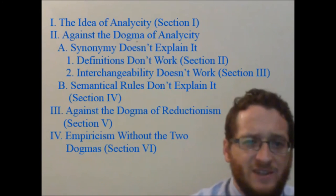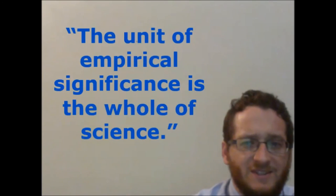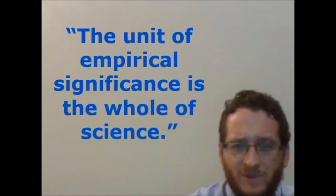He sums up a lot of this in the last sentence of section five, where he says: 'the unit of empirical significance is the whole of science.' In other words, our statements about reality are not tested against experience on an individual basis — the whole system of science is tested against experience as a unit. When experience requires a correction in the system, it can be made anywhere in the system where we need it to be made. It doesn't have to be made at any particular point of scientific theory, because there are no particular points of scientific theory which can be tested on an individual basis.